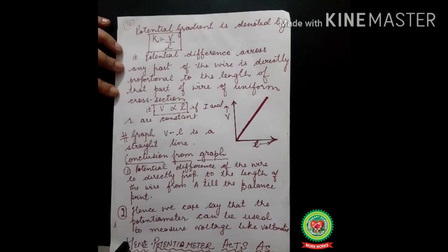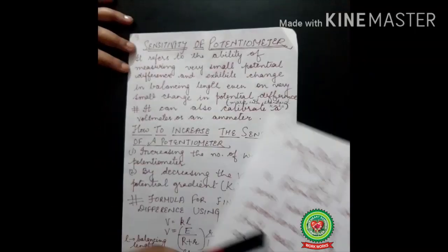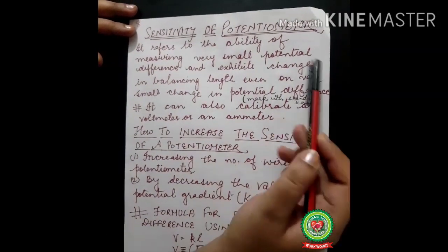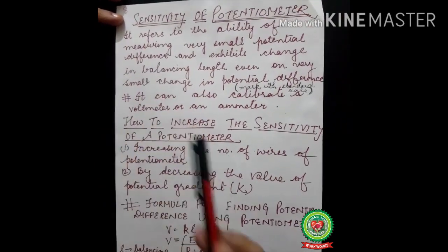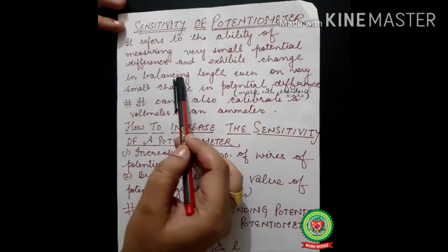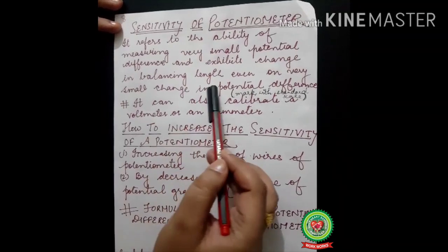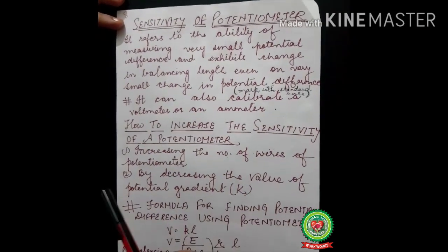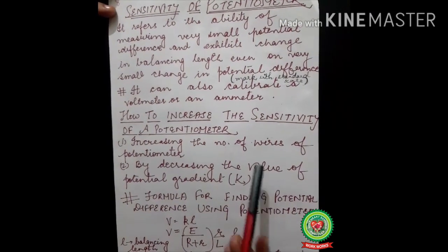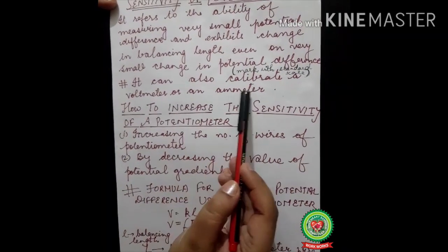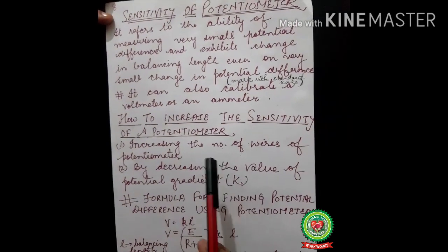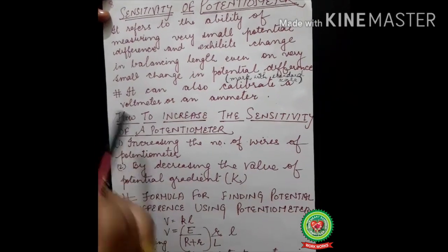Now, the sensitivity of a potentiometer refers to its ability to measure very small potential differences. A potentiometer can measure very small potential differences compared to a voltmeter, and it exhibits a change in balancing length even for a very small change in potential difference. It can also calibrate a voltmeter or an ammeter — calibrate means to mark with a standard scale, for example marking 1 volt, 2 volt, 3 volt on the voltmeter.